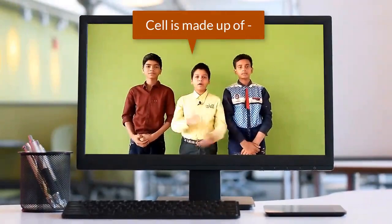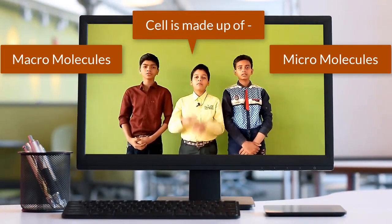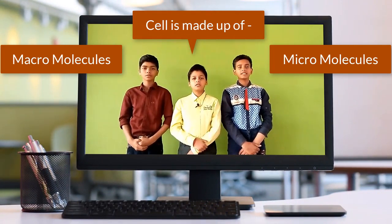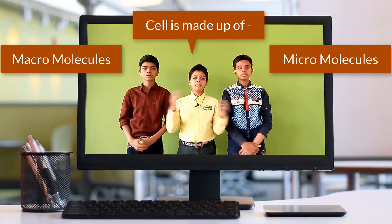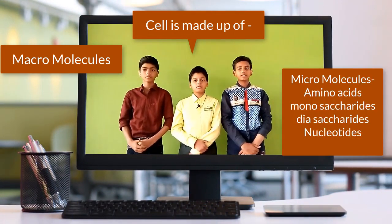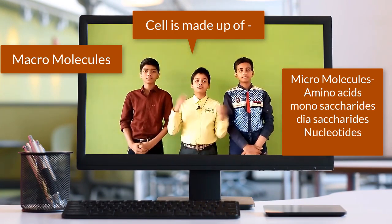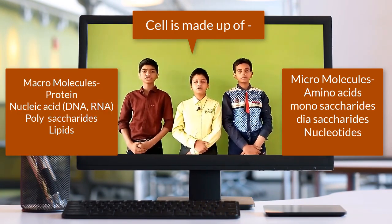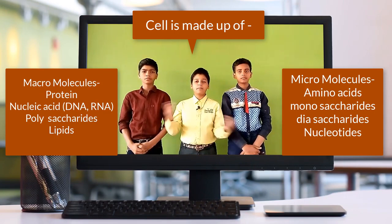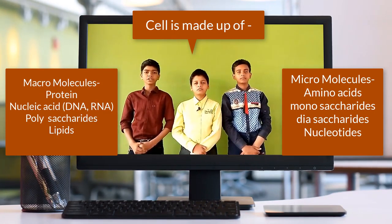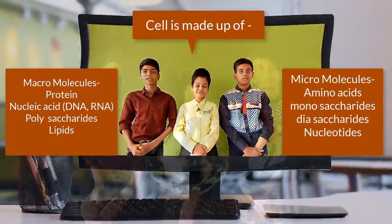Cells are made up of micromolecules and macromolecules. Micromolecules are acid-soluble; examples include amino acids, monosaccharides, disaccharides, and nucleotides. Macromolecules are not acid-soluble; examples include proteins, nucleic acids (DNA and RNA), polysaccharides, and lipids.